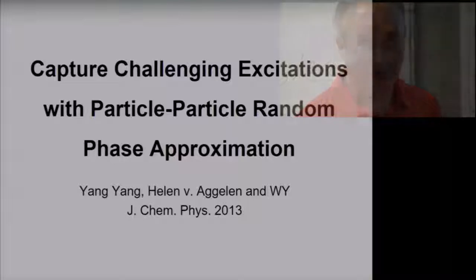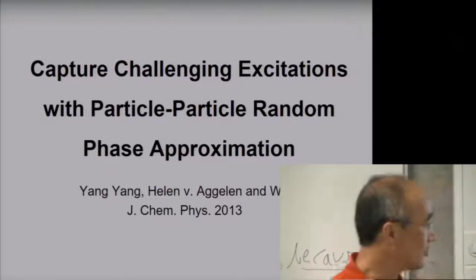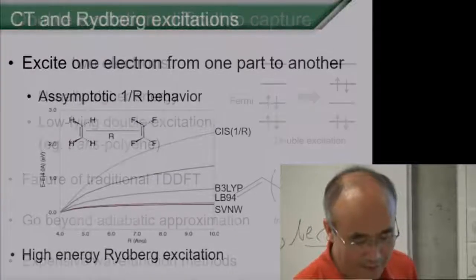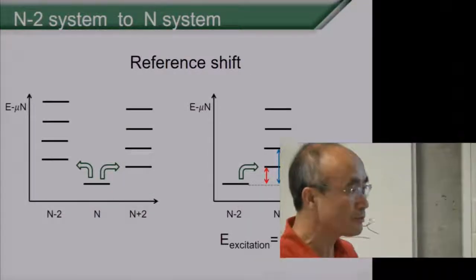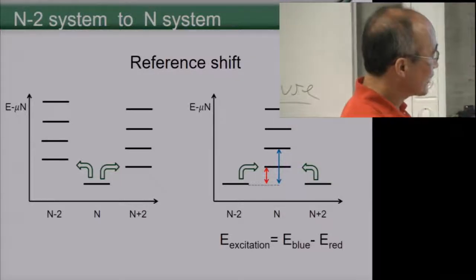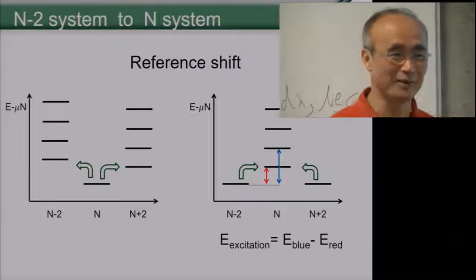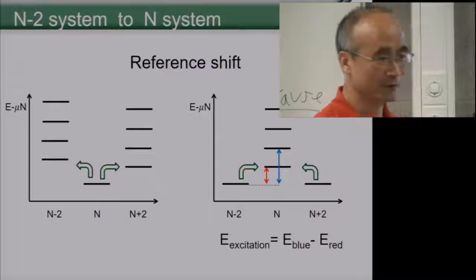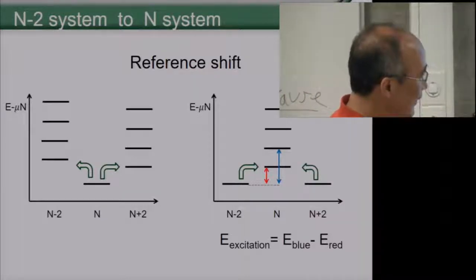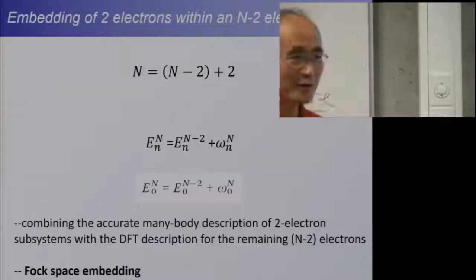Now turning to excitation energies from linear response theory — the dynamic linear response contains excitation energy information as well. This is the paper on the topic. Skipping the details of the challenges in TDDFT, here is the excitation picture: we excite particles from N to N-2 and N+2. By shifting the reference and doing the calculation at N-2, the N-electron ground state and excited states are all described as excitations of this N-2 reference.